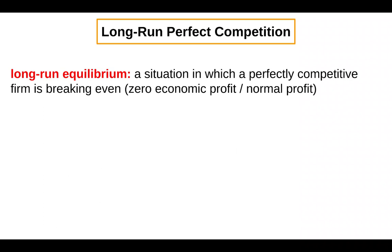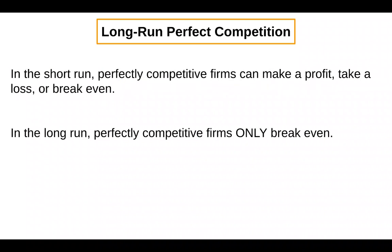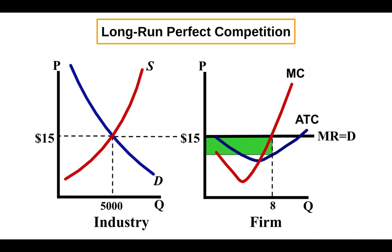That leads to what's called long-run equilibrium — a situation in which a perfectly competitive firm is breaking even. The fate of every perfectly competitive firm in the long run is to earn zero economic profit, or a normal profit, and therefore break even. In the short run, perfectly competitive firms can make a profit, take a loss, or break even, but in the long run the only thing they can do is break even.